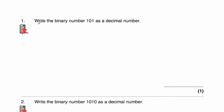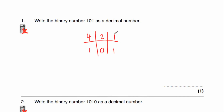Let's have a look at question one. Question one says, write the binary number 101 as a decimal number. Like we use columns to help with place value, I'm going to write down columns: starting with 1, multiply by 2 is 2, multiply by 2 is 4. We've got the number 101, so we've got 1 one, no 2s, and 1 four. So 4 plus 1 equals 5. The binary number 101 as a decimal number is 5.